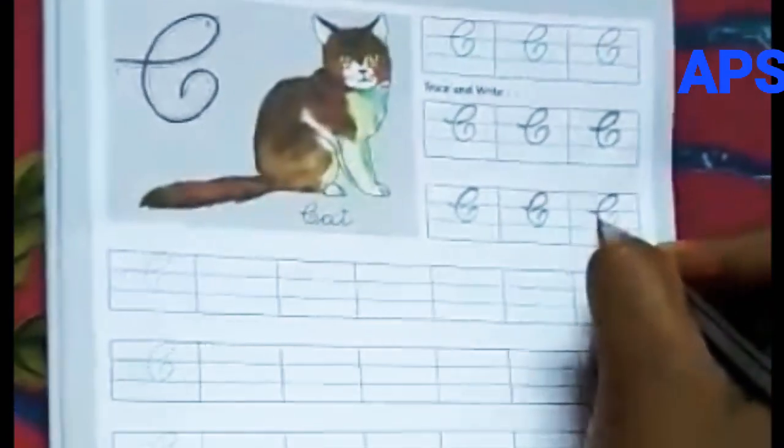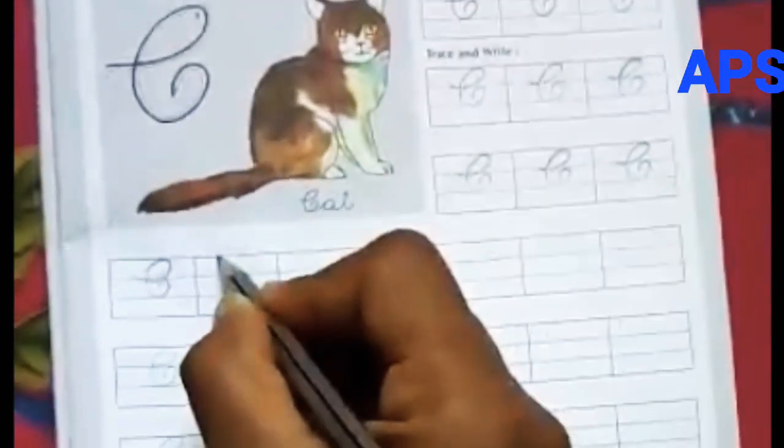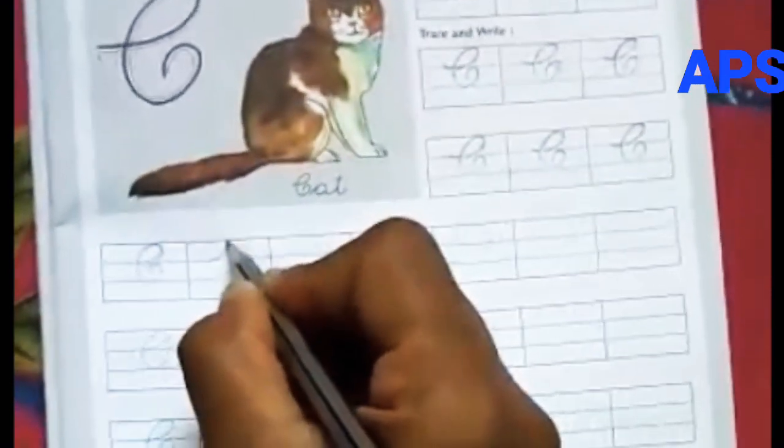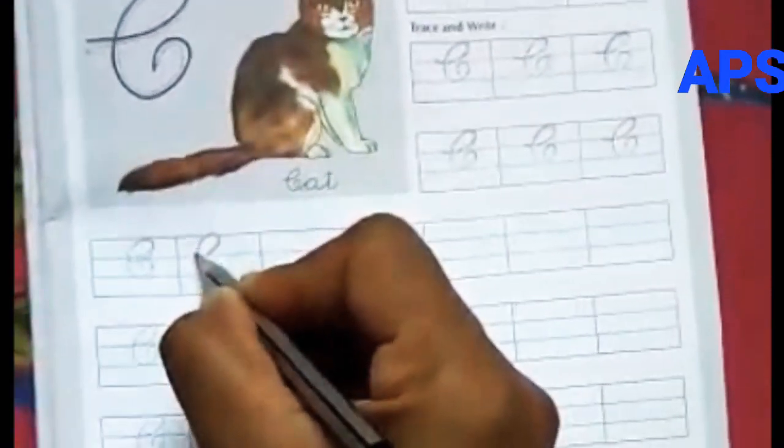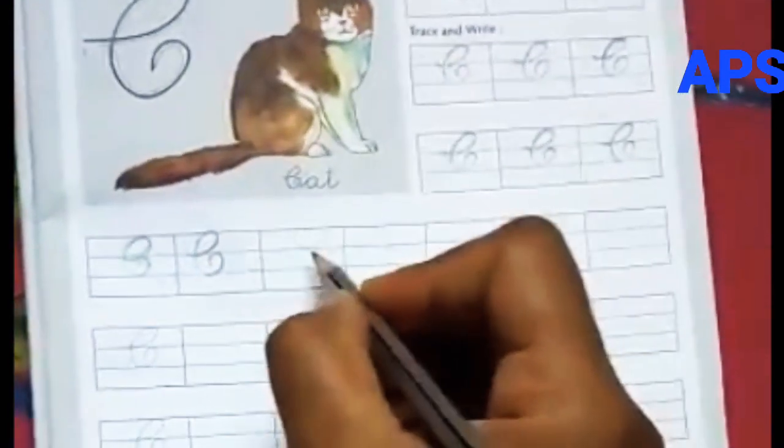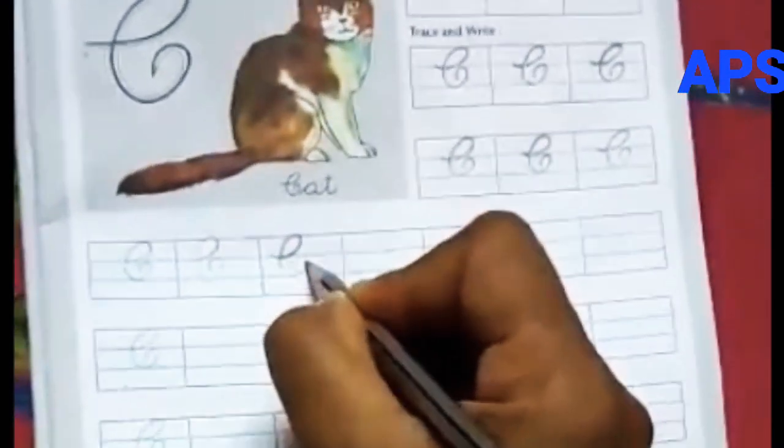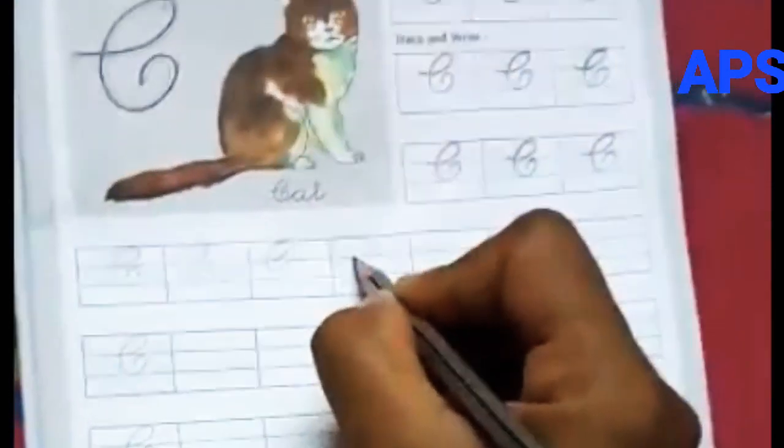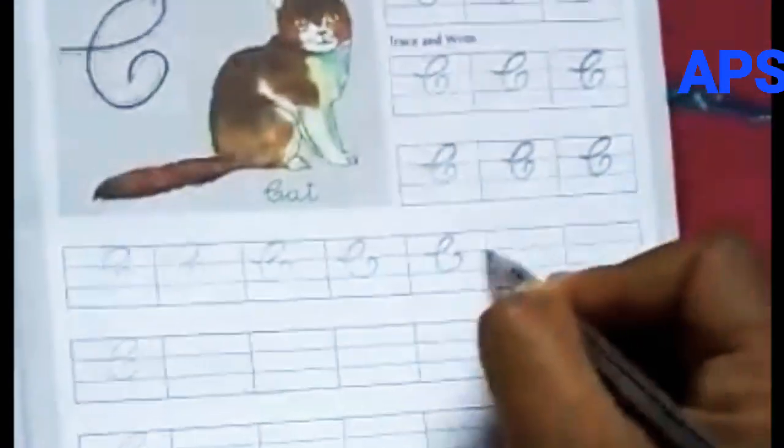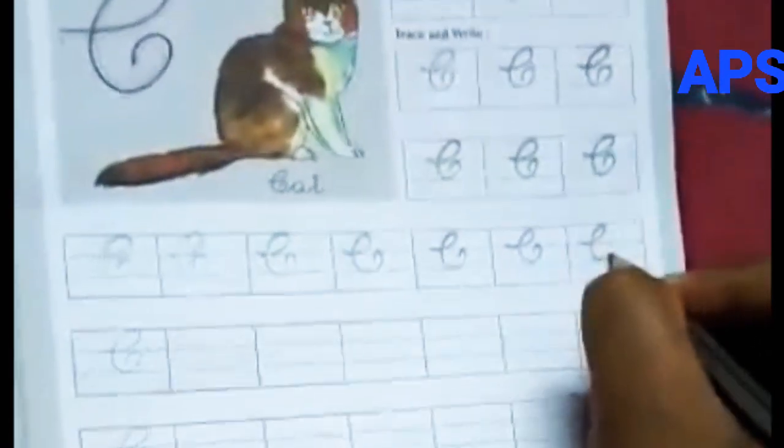C for CAT. I hope you all understood how to write the letter C. Now see here. 1, 2, 3, 4. Start from second line. Goes, that's the first line. Come back and turn till second line. Then go back and turn back and like this. So C for CAT. I hope you all understood.